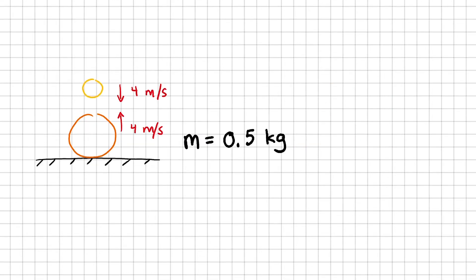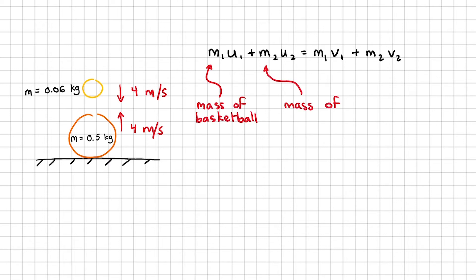The mass of a basketball is roughly 0.5 of a kilogram. A tennis ball weighs around 0.06 kilograms. Let's work with the equation of conservation of momentum first. I'll write down the equation and then explain what each term means. M1 U1 plus M2 U2 is equal to M1 V1 plus M2 V2. I'm going to let M1 be the mass of the basketball. M2 be the mass of the tennis ball.